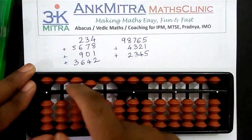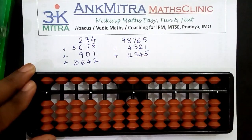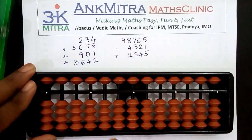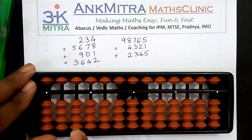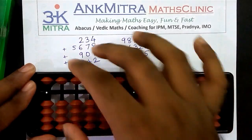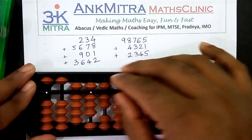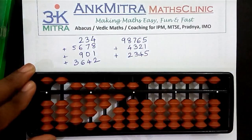Now let's look at the second example. We now have zero on the abacus. In the second example the first number is a five-digit number and the next two numbers are four-digit numbers. This being the thousands place, the next one will be the ten-thousands place. The first number is ninety-eight thousand seven hundred and sixty-five, so we'll enter nine, eight, seven, six, five.